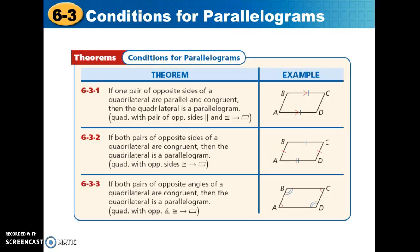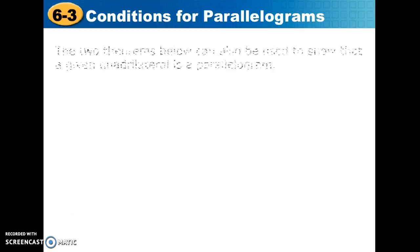In theorem 6-3-2, if we have two pairs of opposite congruent sides, then we know that it's a parallelogram. Theorem 6-3-3 tells us if we have two pairs of opposite angles that are congruent, then we can conclude we have a parallelogram.